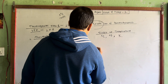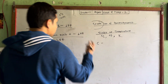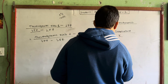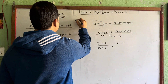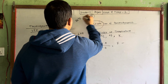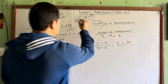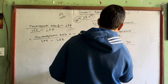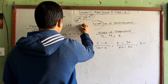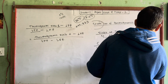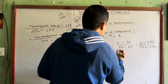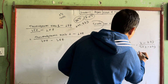Applying this formula: C minus 0 upon 100 minus 0 equals F minus 32 upon 212 minus 32 equals K minus 273 upon 373 minus 273. This simplifies to: C divided by 100 equals F minus 32 divided by 180 equals K minus 273 divided by 100.